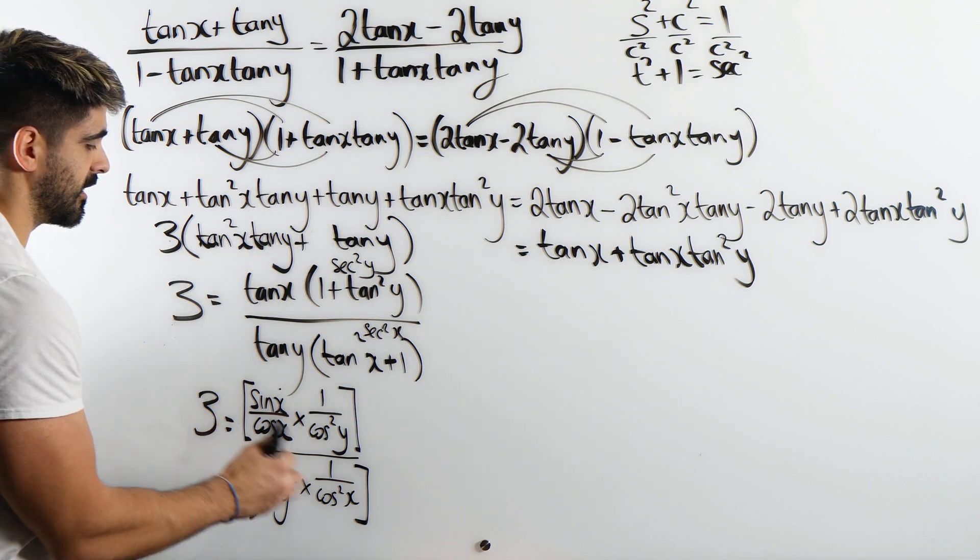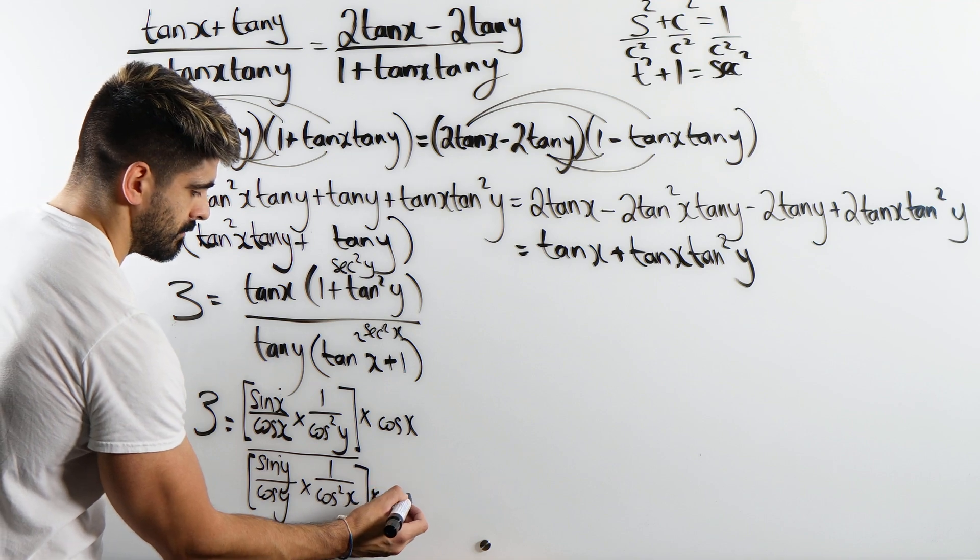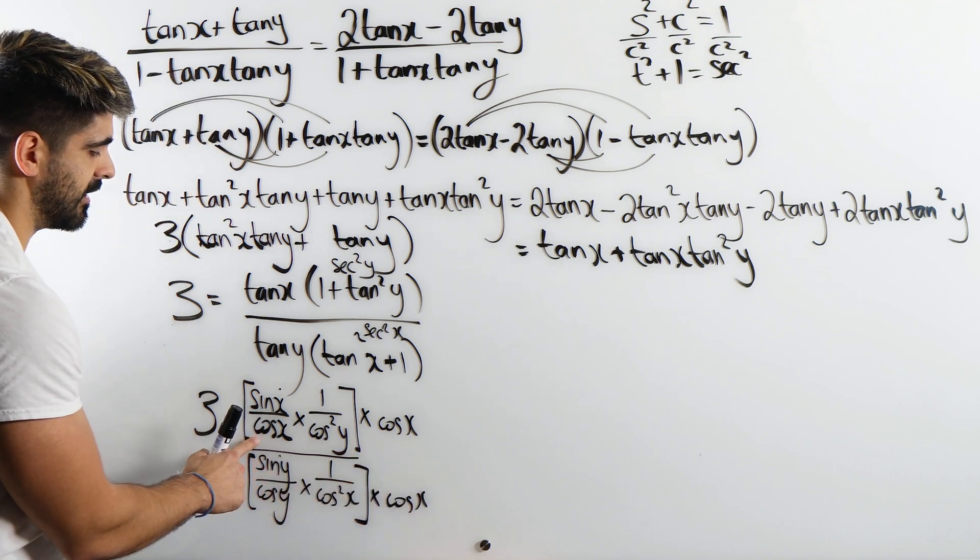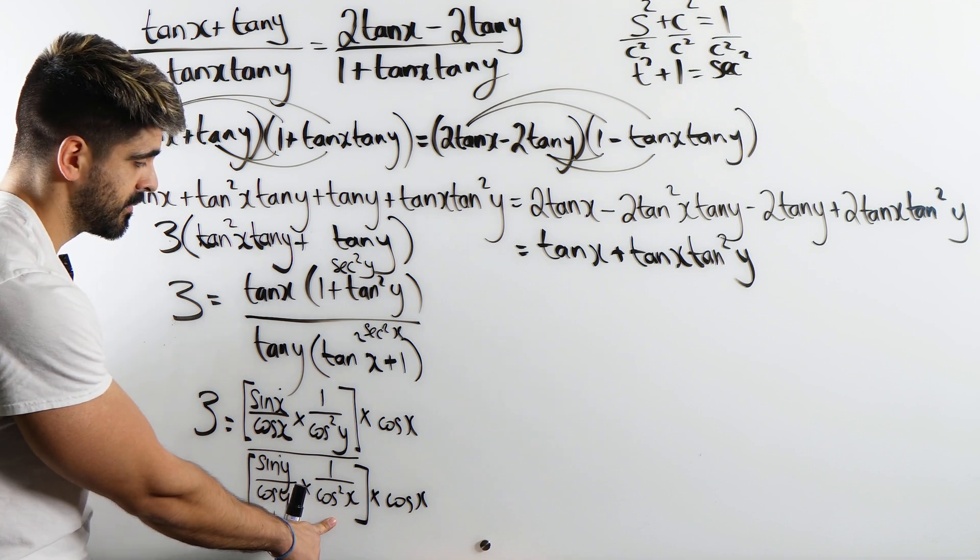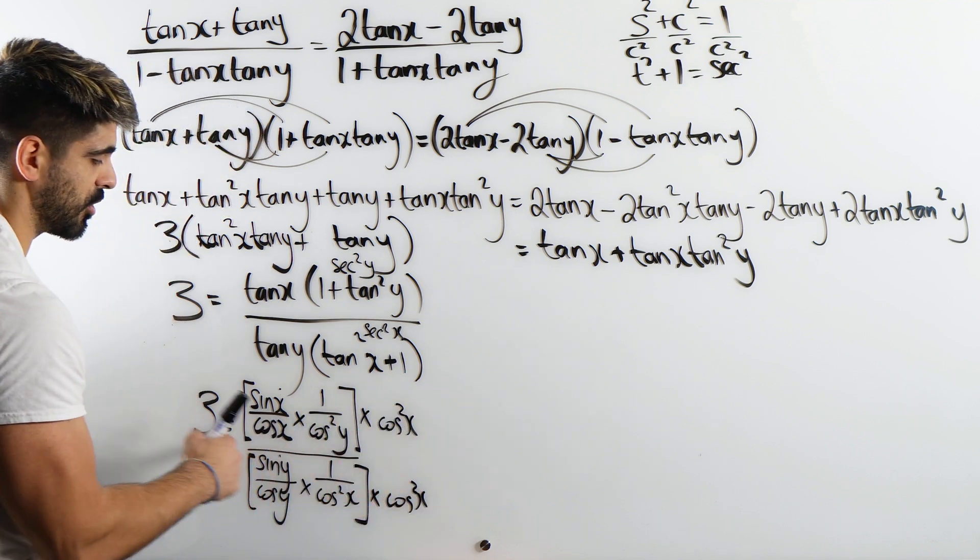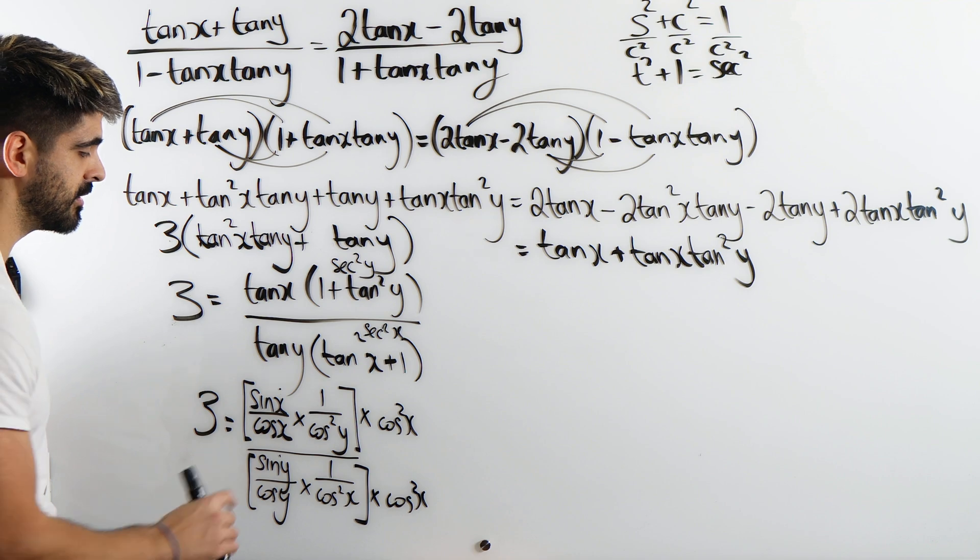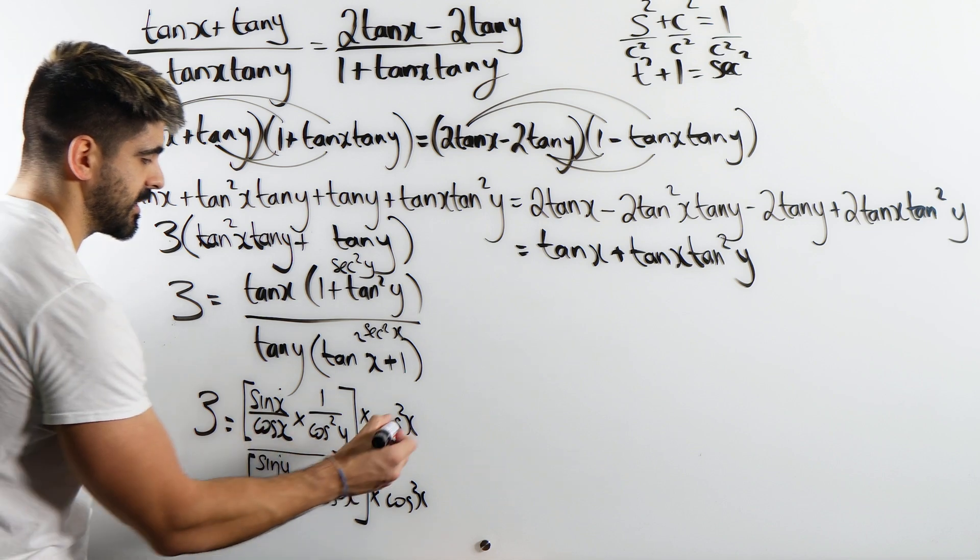You just say, okay, what do I need to multiply the top and bottom by to get rid of these fractions within fractions? Well, for example, here we're going to have to times top and bottom by cos x, right? But then I notice that that won't cancel out the cos squared. So I need to times through by cos squared. Because cos squared will also cancel out the cos. And by that same argument, I'm going to times top and bottom by cos squared y.